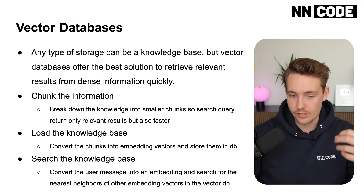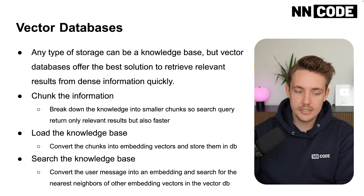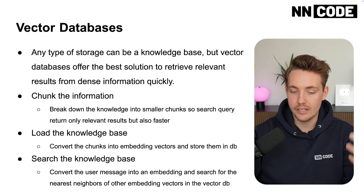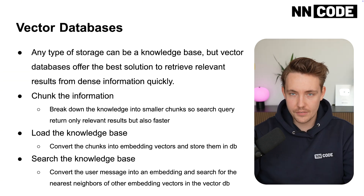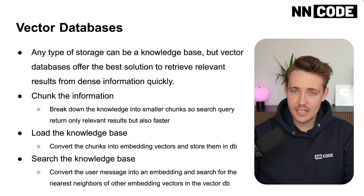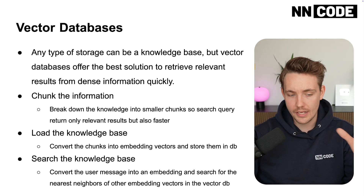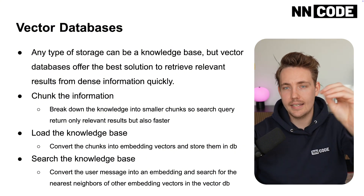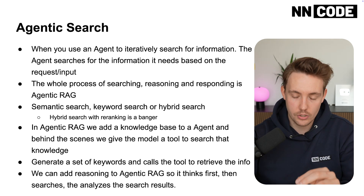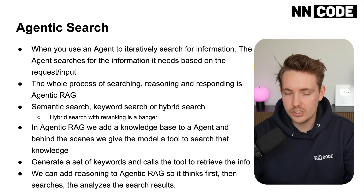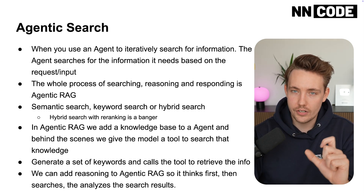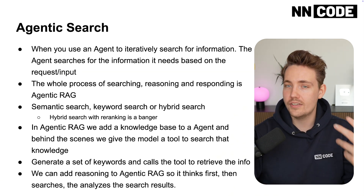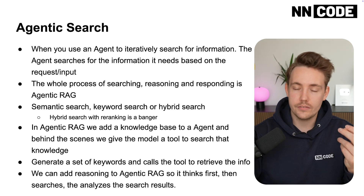That's why vector databases, agentic RAG pipelines, and having multiple databases to work with is so important. We chunk information, load a knowledge database, convert it into vector embeddings, store those in the vector database, then convert the user message into an embedding and search for the nearest neighbors in our vector DB. There are different methods for looking up vector embeddings in the database, but at the end of the day it's just about retrieving information and giving it to our agent so it can generate a response.